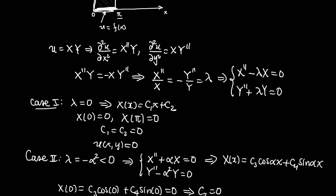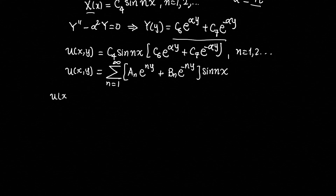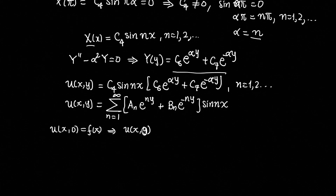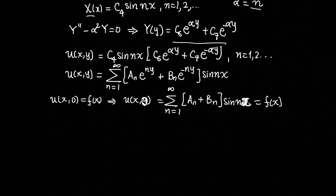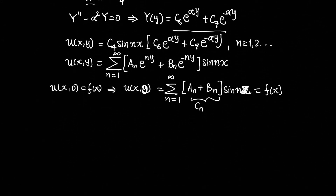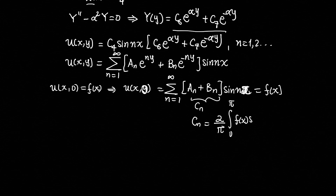Now I apply the remaining boundary conditions. The first is u(x, 0) = f(x). Substituting y=0 into the general solution gives Σ(aₙ + bₙ)·sin(nx) = f(x). If we call (aₙ + bₙ) = cₙ, then by the Fourier sine series formula: cₙ = (2/π)∫₀^π f(x)·sin(nx) dx.